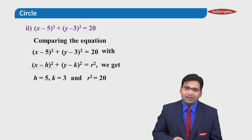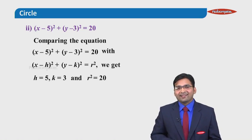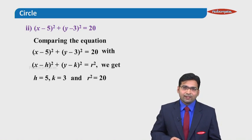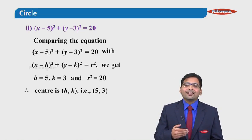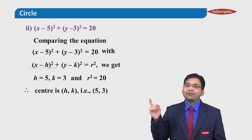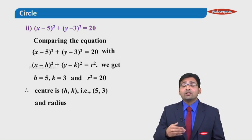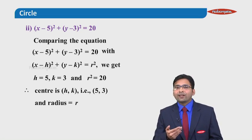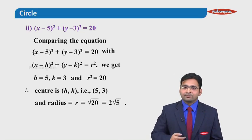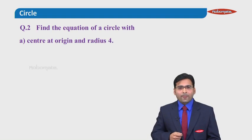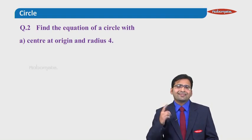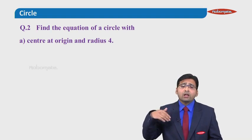On the right hand side, r square is equal to 20, so r is going to be square root of 20. So I can say directly the center of the circle, that is h comma k, is 5 comma 3, whereas radius of the circle is square root of 20, which is nothing but 2 root 5.